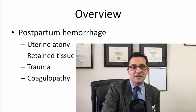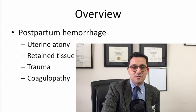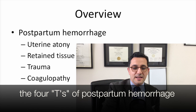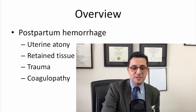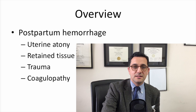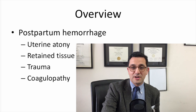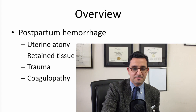There's a mnemonic used to memorize the causes of postpartum hemorrhage: the 4Ts. T for tone — uterine atony; T for tissue — retained tissue; T for trauma, or lacerations; and T for thrombus, or lack of thrombus, which is coagulopathy.